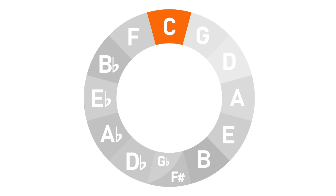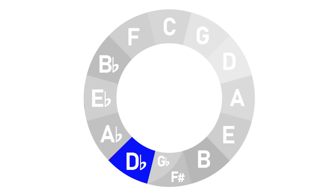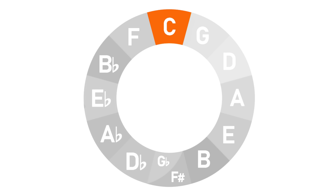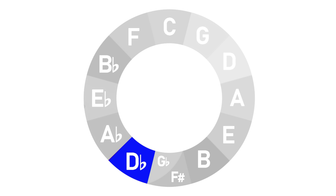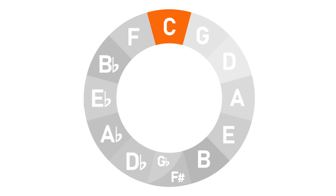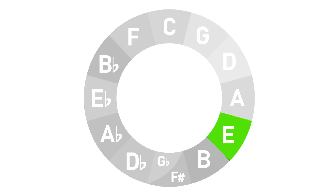That said, I am curious to see what a piece would sound like if it did have a chord progression that moved all the way around the circle of fifths. I couldn't actually find an example of this, so I thought it would be a great opportunity to create my own piece that travels all the way around the circle of fifths, starting on the chord of C and working all the way around until I get back to C at the end.